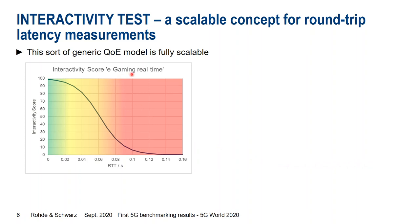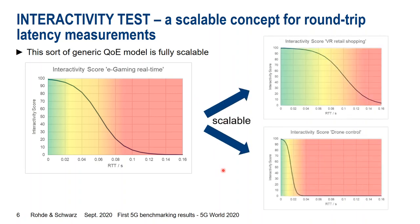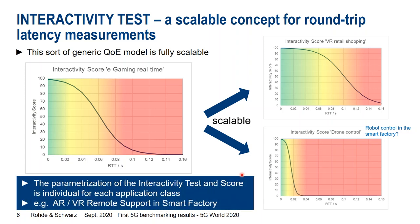We are using the e-gaming traffic profile here — multiplayer cloud-based games. But since the model is scalable and we can change the parameterization, we can use it for other applications as well. On the upper end, you see virtual reality retail shopping with relaxed requirements — it doesn't matter to see yourself in a suit maybe 20–30 milliseconds later. At the bottom, you see the interactivity test for drone control or robot control in a smart factory, where requirements are much tougher, so the curve shifts to the left. This interactivity test can be parameterized and applied to each interactive application we can imagine.